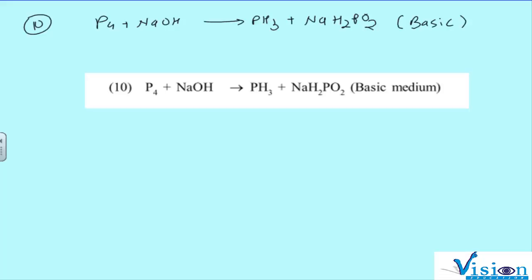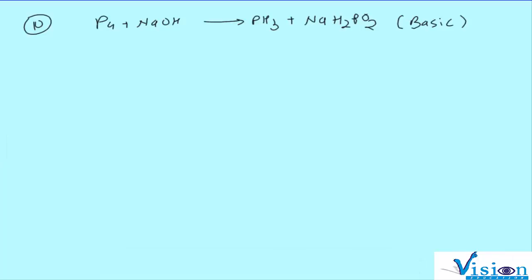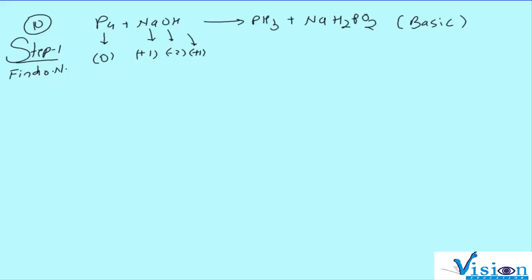हमको basic medium मिला है। जब basic medium मिलता है तो पहले हम step number one करेंगे। Step number one says: find oxidation number — हर एक का individual oxidation number find करते हैं। P₄ का zero, hydrogen का plus one, और यहाँ पे minus three आएगा।